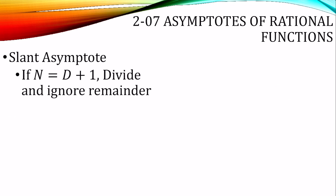There is also something called a slant asymptote. It occurs if the degree of the numerator is exactly 1 more than the degree of the denominator. To find it, divide the numerator by the denominator and ignore the remainder — you may need to use long division or synthetic division. A rational function will either have a horizontal asymptote or a slant asymptote, but not both, because a slant asymptote requires n greater than d, and when n is greater than d there is no horizontal asymptote.